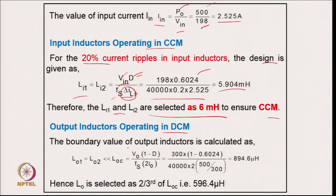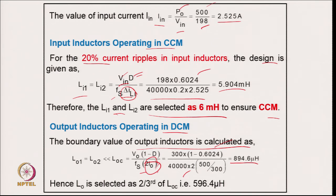The output inductor is designed for discontinuous mode. For the boundary condition, the ripple is twice the current flowing through the inductor, which equals the load current. Calculating the boundary value gives 894.6 μH. To ensure the inductors always operate in DCM (as required for the voltage follower approach), both output inductors are selected as two-thirds of this value: 596.4 μH.